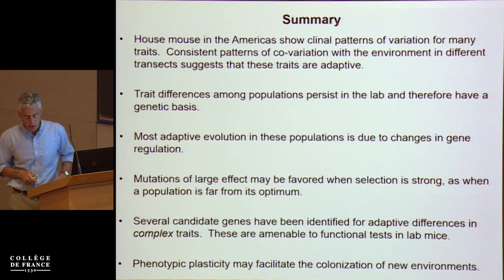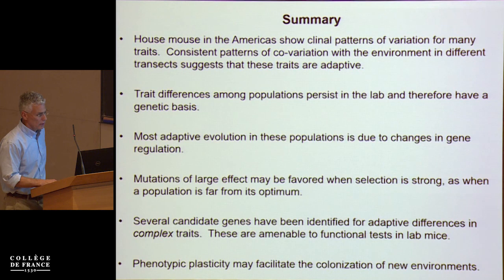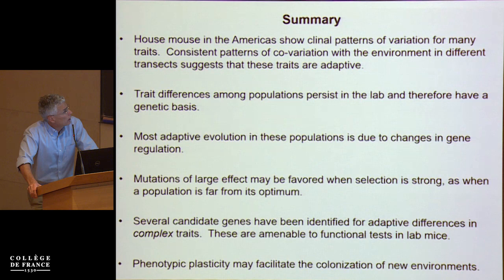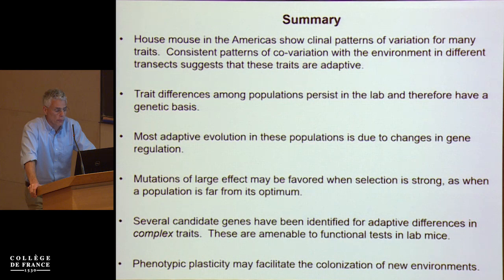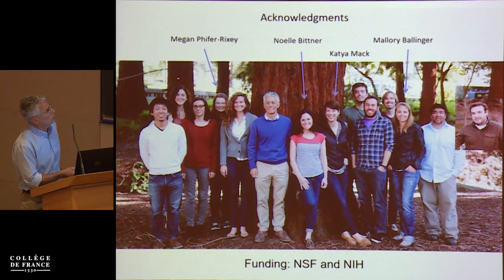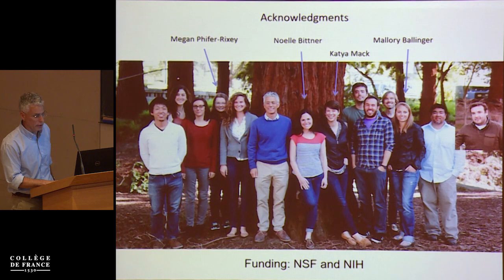For example, one gene shows that mice from the desert have higher expression than mice from a wet environment, but in both populations we see a plastic response that goes in the same direction as the evolved response. Mice from Edmonton raised with very little water reach a level of expression equivalent to the baseline level of Tucson mice. We're interested in this idea that plasticity may in some cases facilitate colonization of a new environment. To summarize: house mice show clinal patterns of variation for many traits; differences persist in the lab and therefore have a genetic basis; most adaptive evolution appears due to changes in gene regulation; but some mutations of large effect may be favored when selection is strong. We have a few candidate genes amenable to functional tests, and phenotypic plasticity might facilitate colonization of new environments.